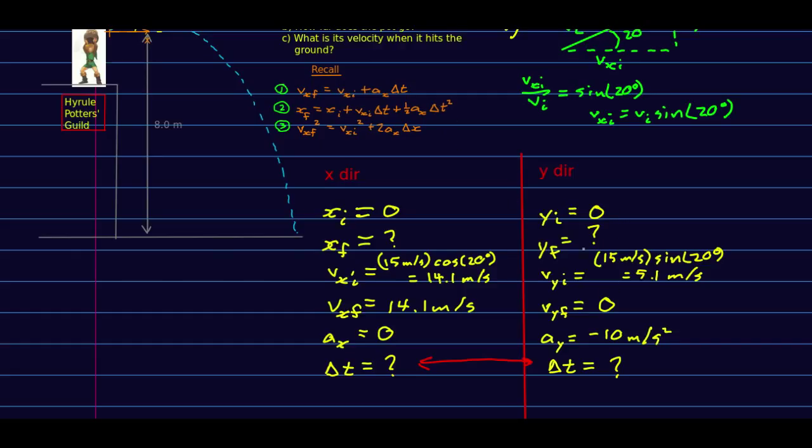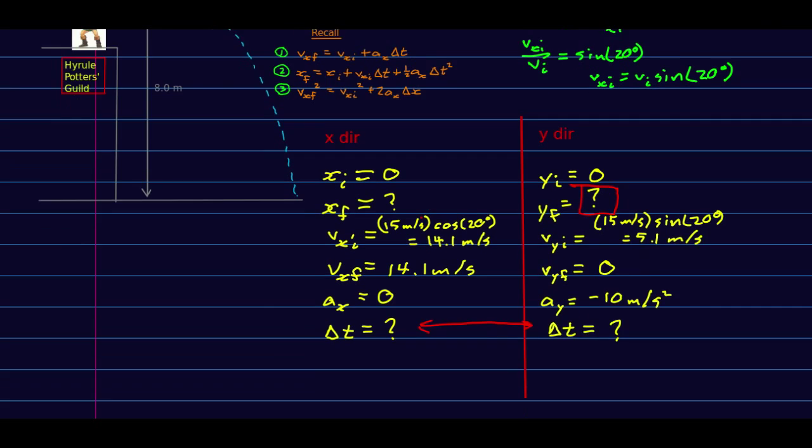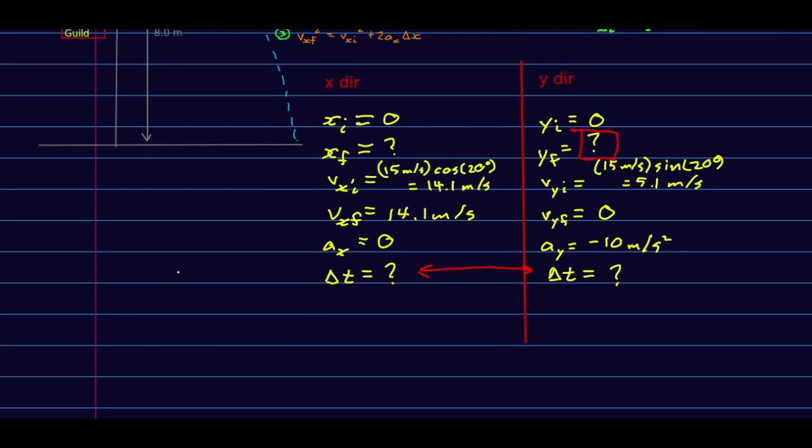We're now ready to try and solve this. As is usual with our strategy, we can just find whether we know four things. Remember, we're looking for y_f—how high it goes. We know enough here: we know three things, we know a, v_f, and v_i, so we can find delta y. That's going to be the third equation, so I'm going to write it out as we will use it.